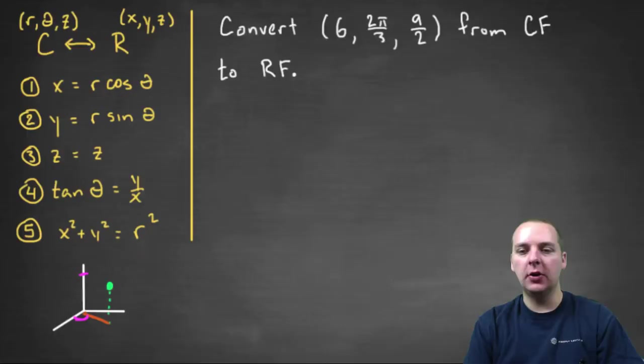This point is currently in cylindrical form, meaning that this is R, this is theta, and this is Z.